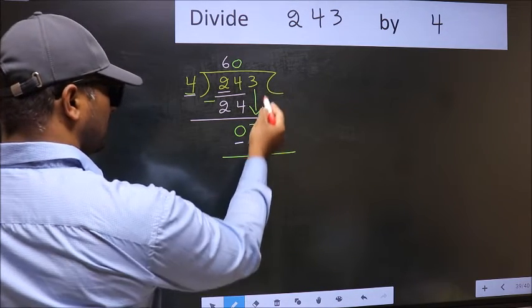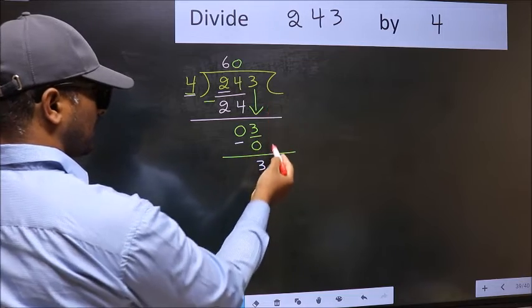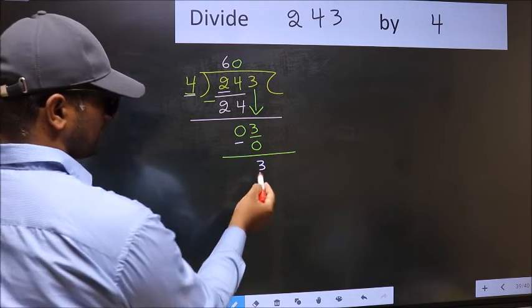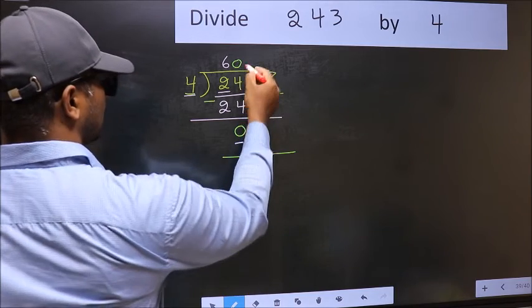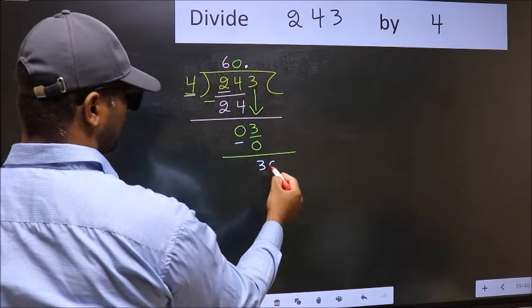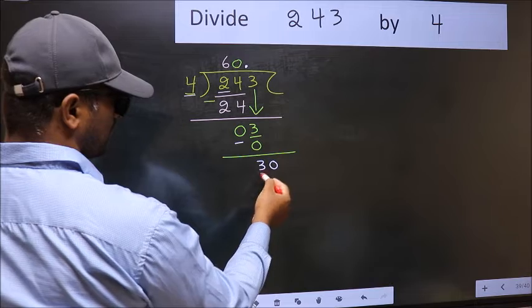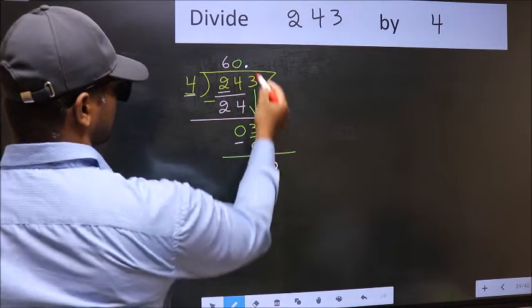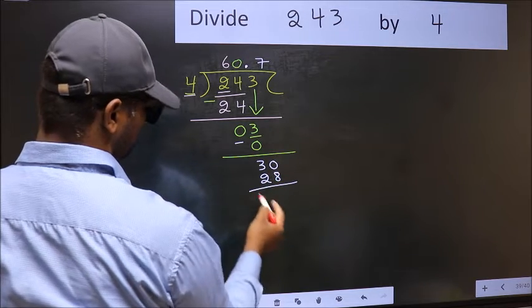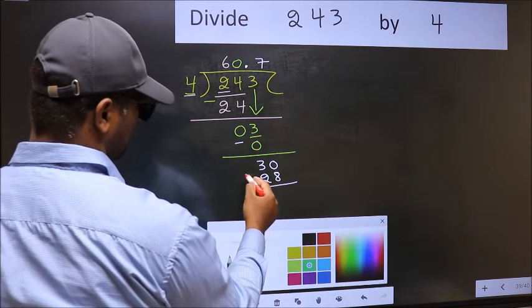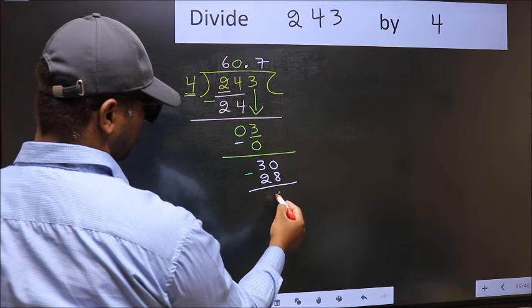Over here, we did not bring any number down, and 3 is smaller than 4. So now you can put a dot and take 0. So, 30. A number close to 30 in the 4 table is 4 times 7, 28. Now you should subtract. 30 minus 28, 2.